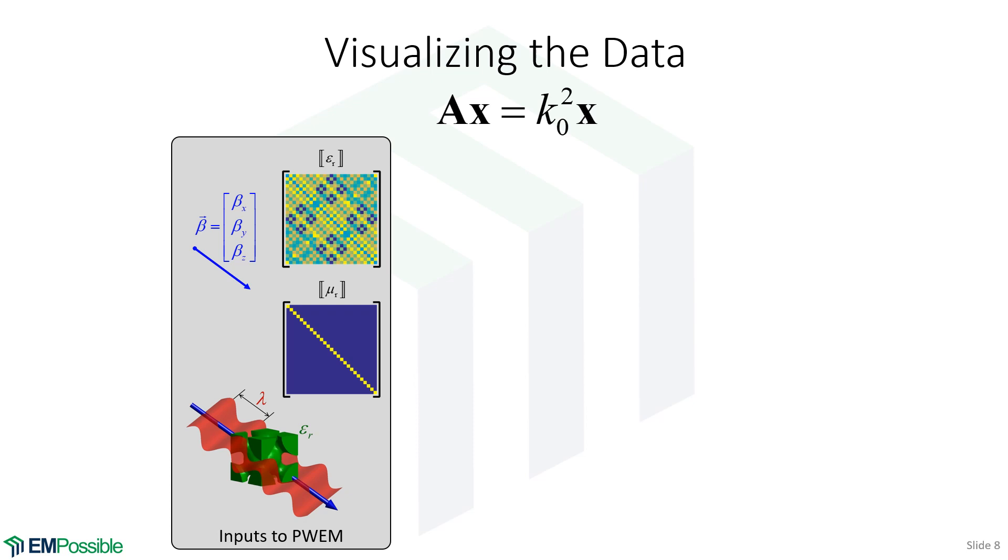Let's visualize the data. When we're building this eigenvalue problem, we need inputs. And here's what our inputs look like. First of all, we have to describe our unit cell. So if our unit cell is dielectric, does not have any kind of magnetic response, our permeability is the identity matrix, which is ones going down the diagonal and zeros out here. But we probably have some kind of periodic structure in the dielectric. These are inputs. These are what is describing our unit cell or the lattice.